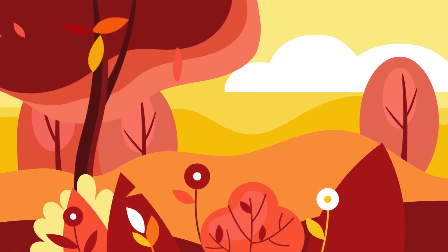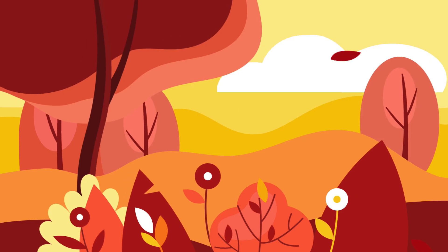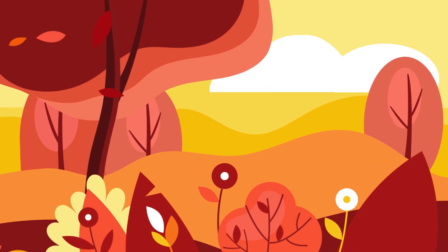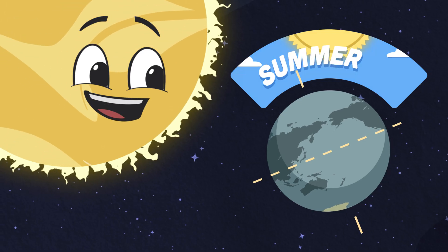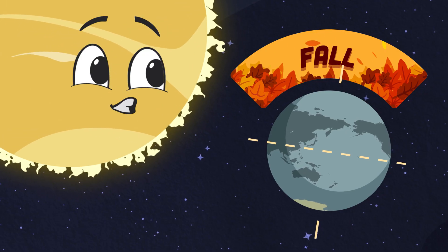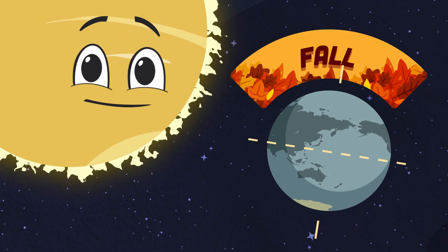After the summer does come the fall, when the leaves start to change and the temperature does fall. When the northern hemisphere starts to tilt away from the sun, the north's air starts to cool as fall has begun.